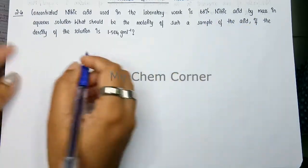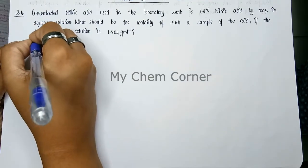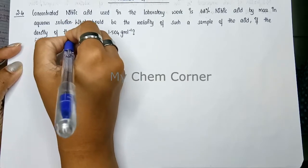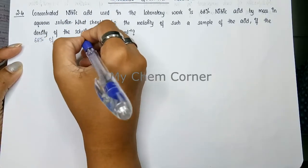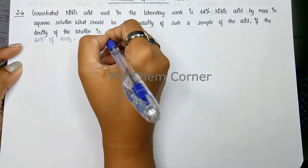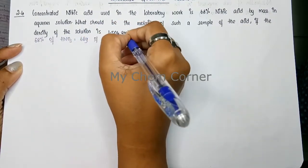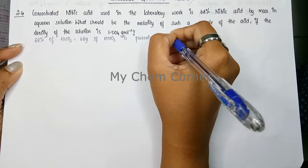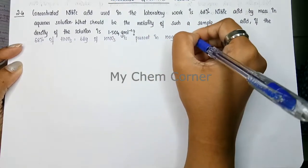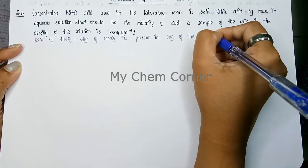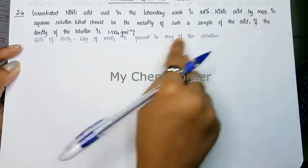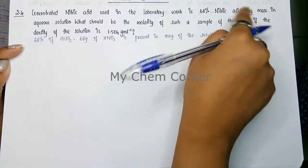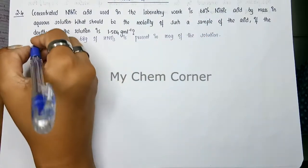What is the meaning of '68% nitric acid by mass'? It means 68 grams of HNO3 is present in 100 grams of the solution, because the question clearly says 'by mass', so you need to get your values in mass. So we have 68 grams in 100 grams of solution.